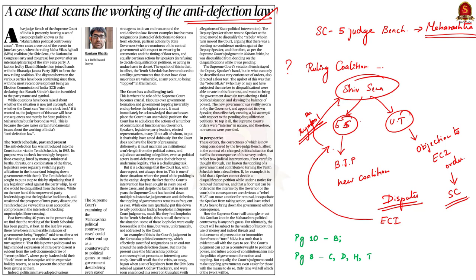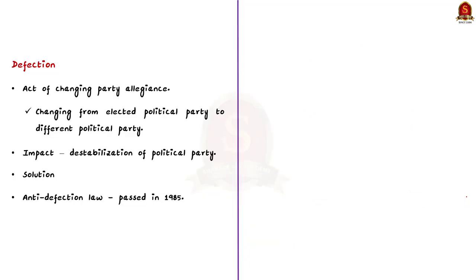Using this opportunity, we will learn about the anti-defection law, the challenges in the law, and finally some solutions to those challenges. In the political sense, the term defection refers to the act of changing the party allegiance — that is, defection defines the person's act of changing from the political party where he got elected to a different political party.